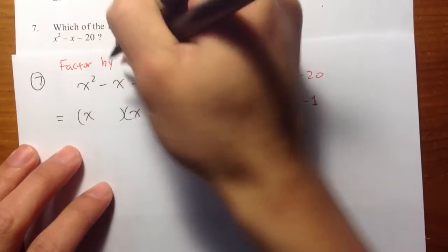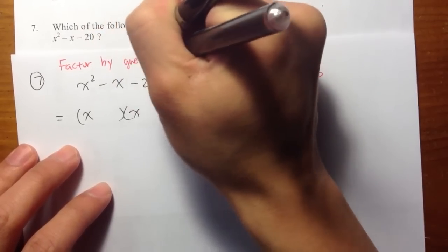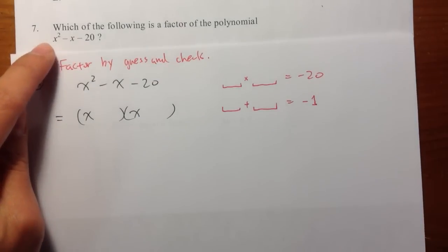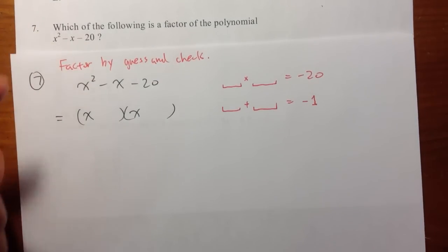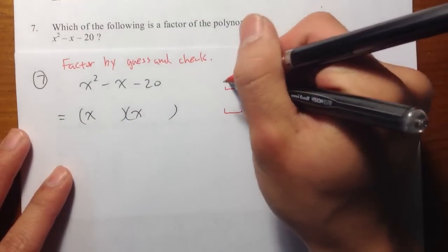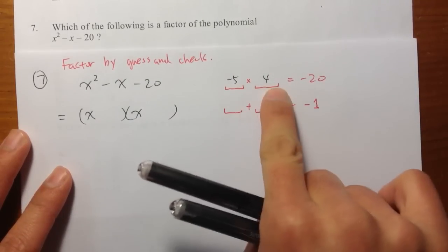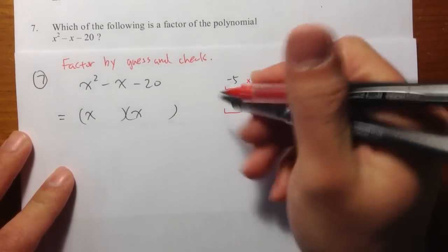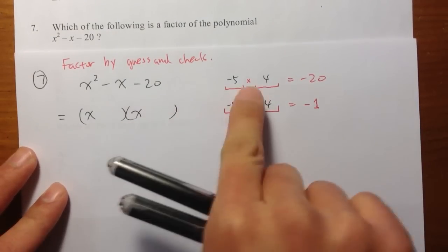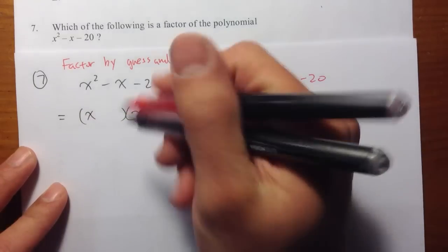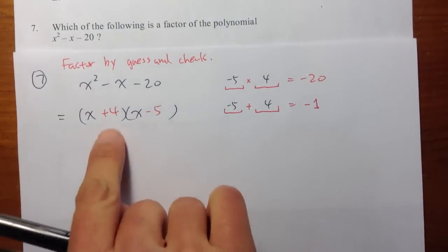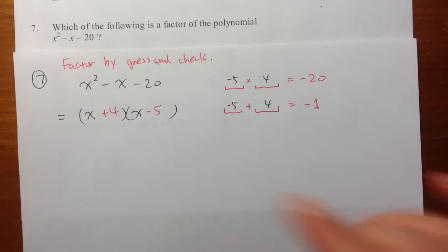So I'll factor by guess and check — trial and error. It works pretty well when you have 1x squared. Notice that negative 5 times 4 does give us negative 20, and then negative 5 plus 4 will be negative 1. So that's pretty much it. I'm going to put negative 5 here and 4 here — the order doesn't matter.